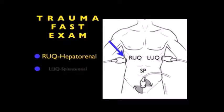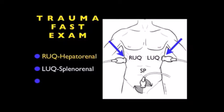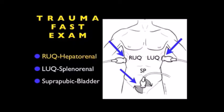We're going to cover the two other views of the trauma FAST exam in upcoming modules: the left upper quadrant view, also known as the splenorenal or perisplenic view, and the suprapubic view, also known as the bladder view. There's a tremendous amount of information we can gain by looking closely into the right upper quadrant area in our trauma patient.